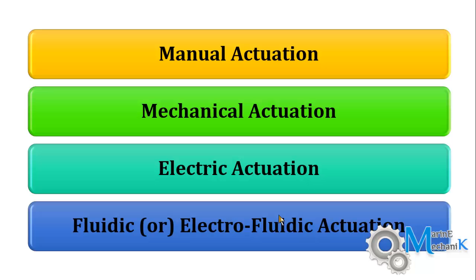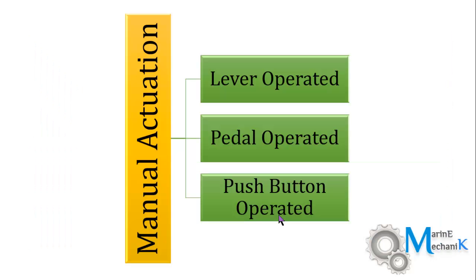There are four basic classifications: one is manual actuation, the second is mechanical actuation, the third is electric actuation, and the fourth is fluidic or electrofluidic actuation. We are going to see examples in each category. Let us start with manual actuation first. Manual actuation is divided into three basic operations: lever operated, pedal operated, and push button operated.